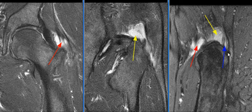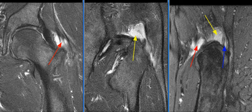There is extensive partial tear of the posterolateral aspect of the gluteus medius muscular and tendinous insertion with nearly 1 cm of tendon retraction, as seen on this image with the blue arrow. Fluid is seen in the subgluteus medius bursa, consistent with bursitis.